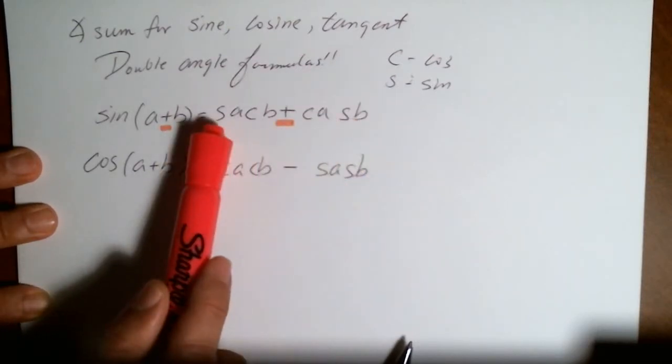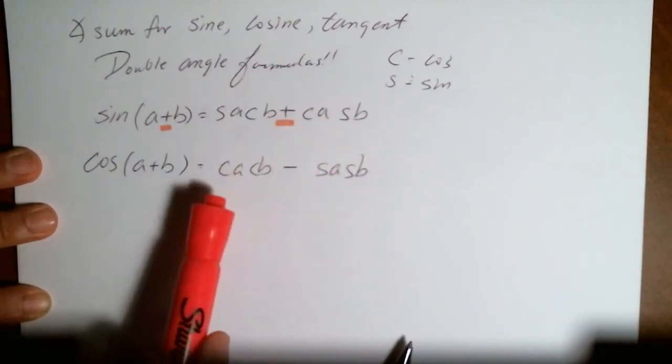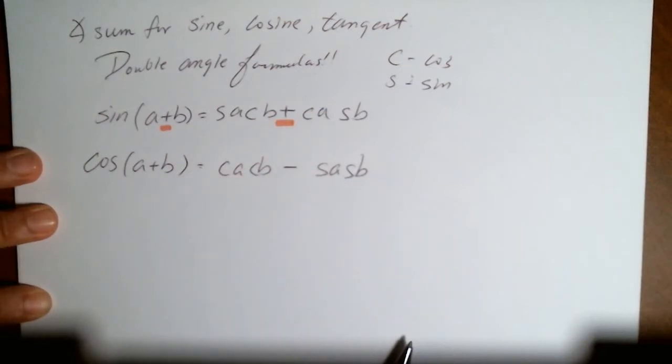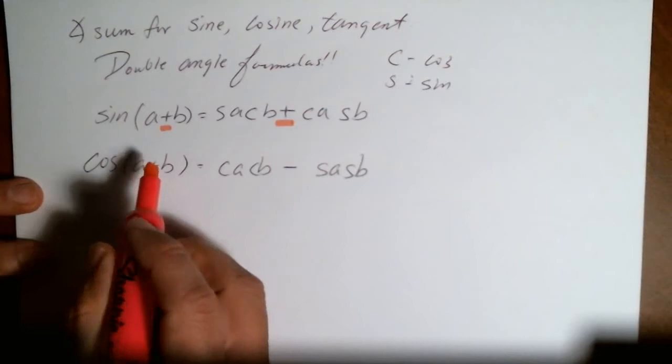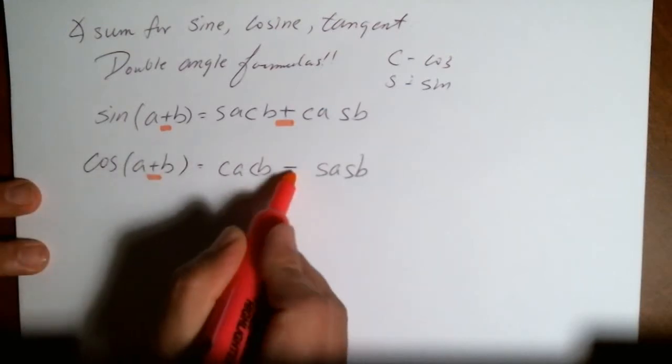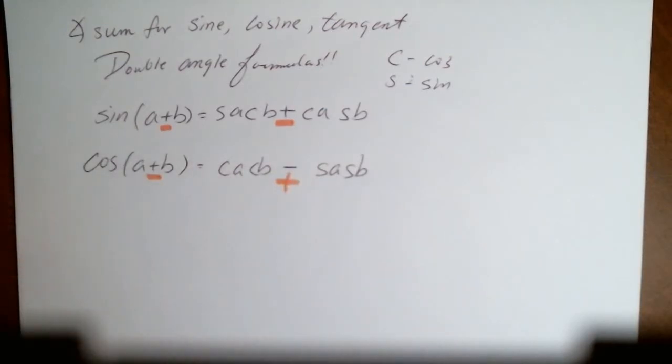It's just like this, except it says sine, cosine, cosine, sine for sine, but cosine, cosine, sine, sine for cosine. And then, obviously, if this is a minus right there, you change the sign, so that becomes a plus. That's it.